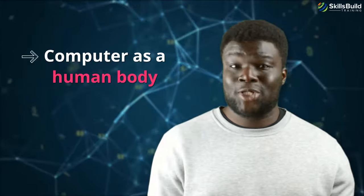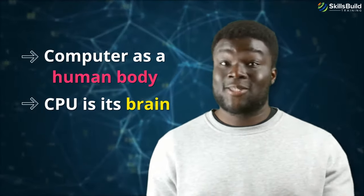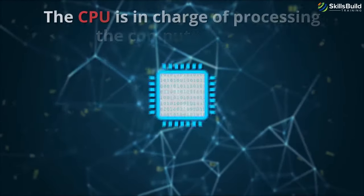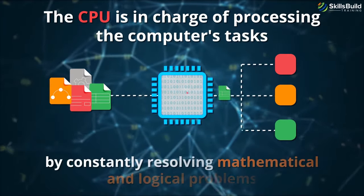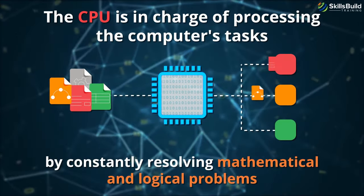A common analogy used for describing a computer's processor or CPU is thinking of the computer as a human body and the CPU is its brain. From this point forward we'll refer to the processor as a CPU and vice versa. The CPU is in charge of processing the computer's tasks by constantly resolving mathematical and logical problems.